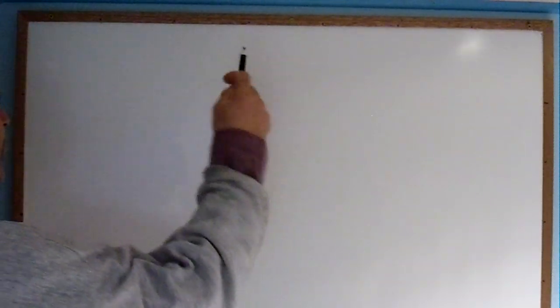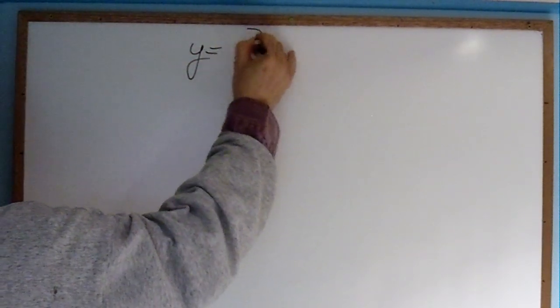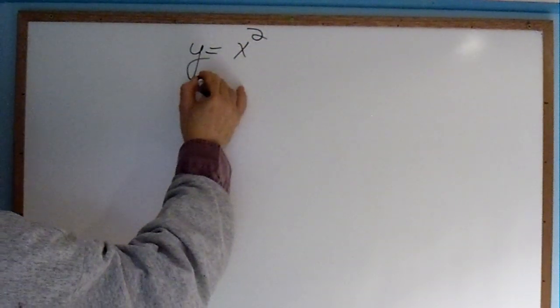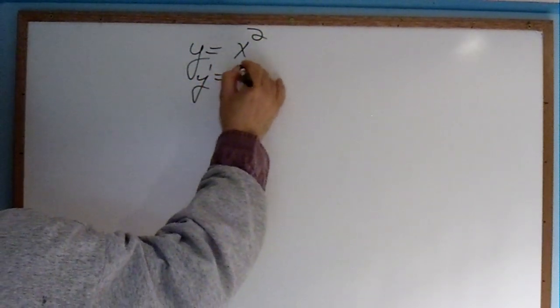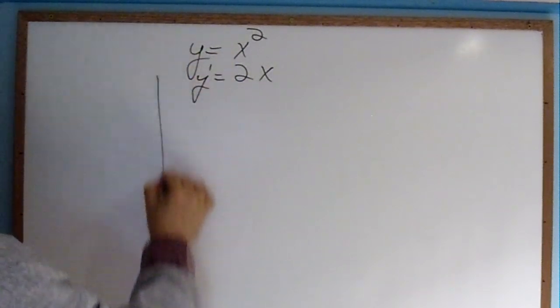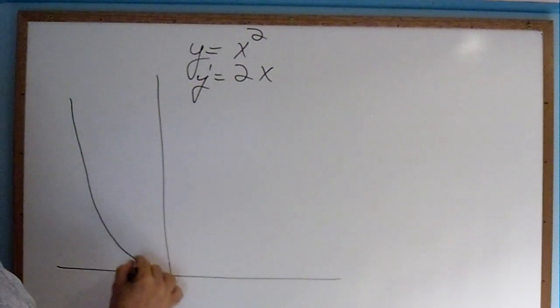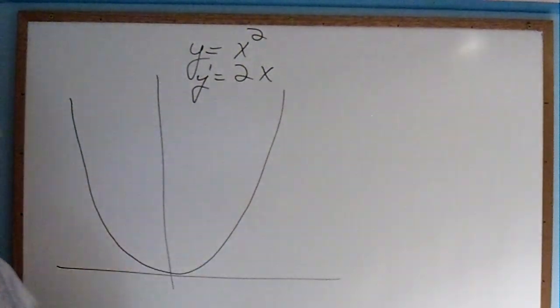Let's take the equation y equals x squared. The derivative of that becomes y prime equals 2x. Let's draw the equation y equals x squared. It looks something like this.